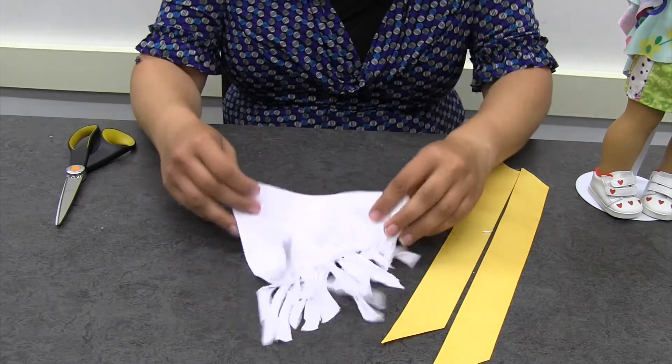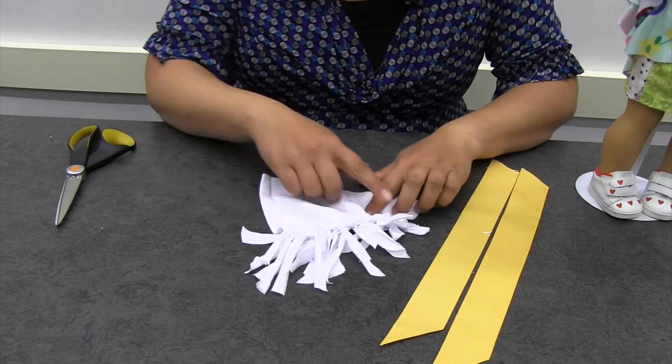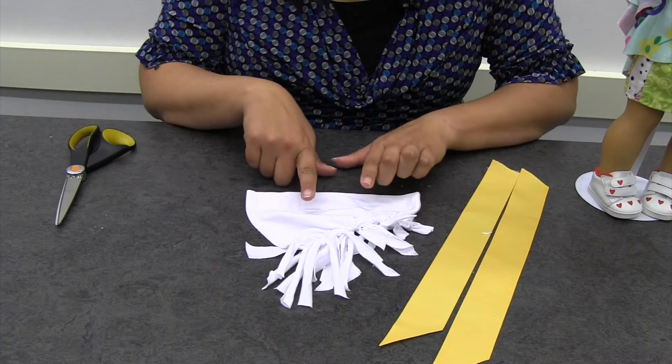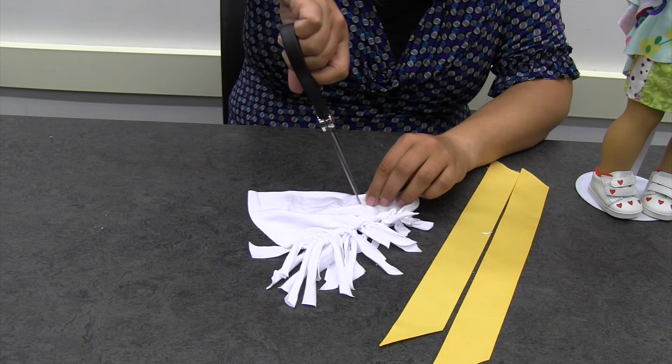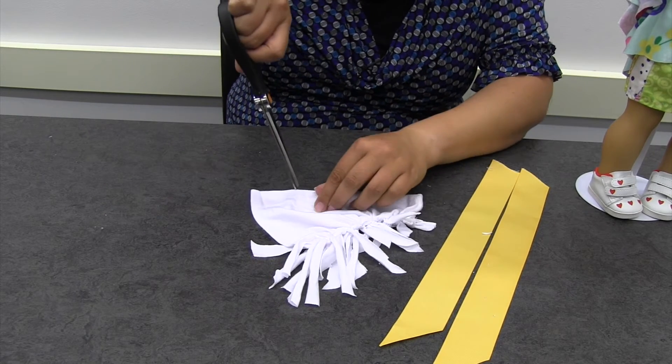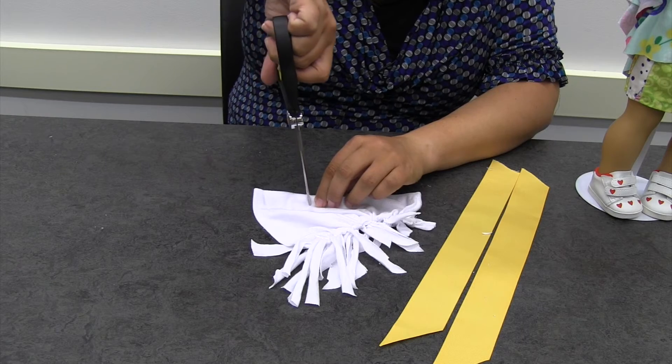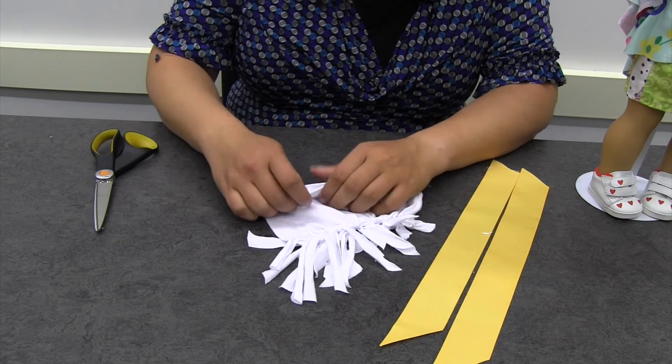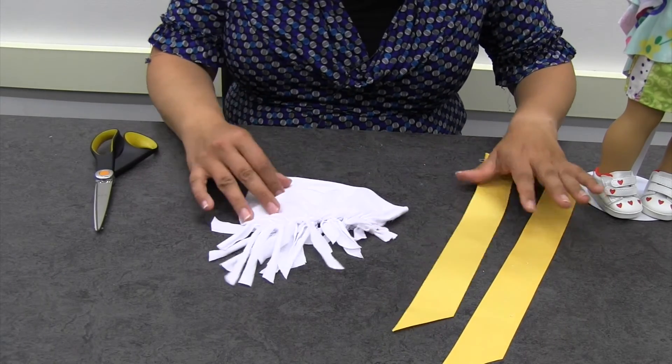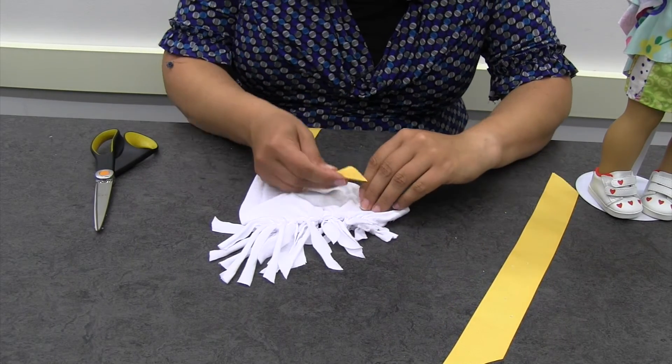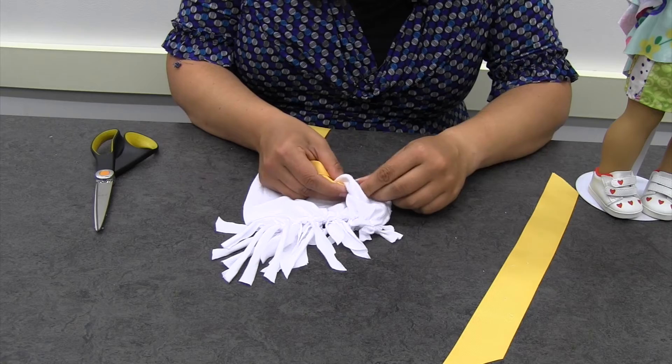So now that we have our really cool fringe, I'm gonna cut two slits in my bag. And I'm gonna try to make sure that I go through all my layers here, and it looks like I did. Then I'm gonna take my piece of ribbon and I'm going to thread it through.